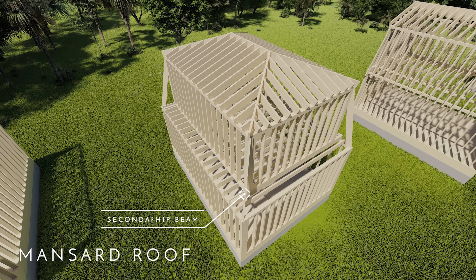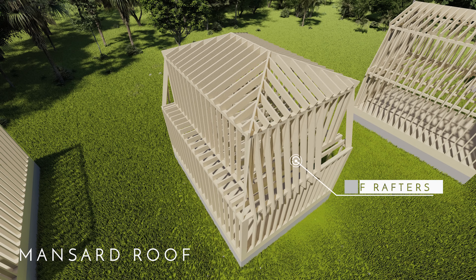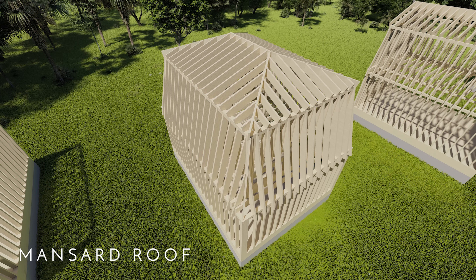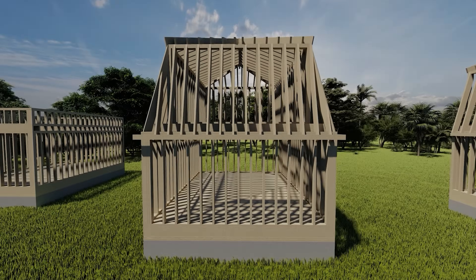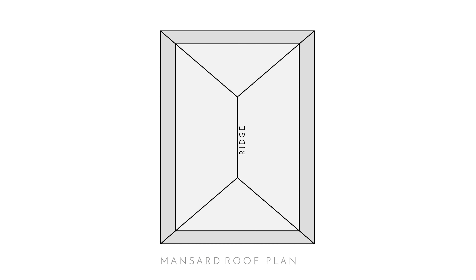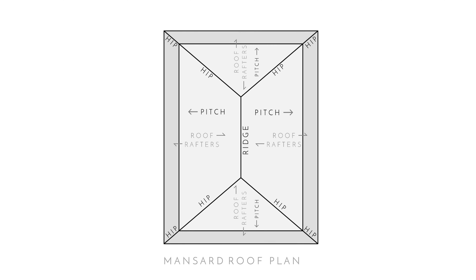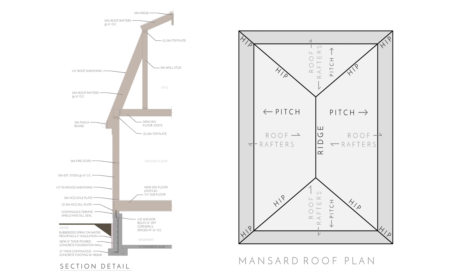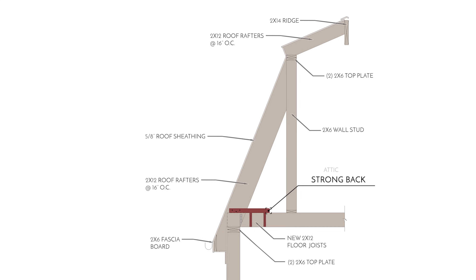The mansard has a secondary set of hip beams coming from the corners of that box built on top, all the way down to the corners of the first floor. Everything between the hip beams is filled with rafters and the fascia board caps them all off. The mansard roof plan is similar to the hip roof plan — the only difference is those offsets off every side creating the steeper pitch. In a mansard roof we have eight hip beams, not four. The section detail is much like the gambrel, and just like the hip roof, strong backs are implemented wherever the rafters do not run the same way as the ceiling joists.